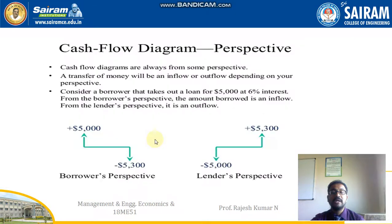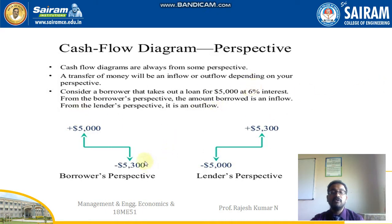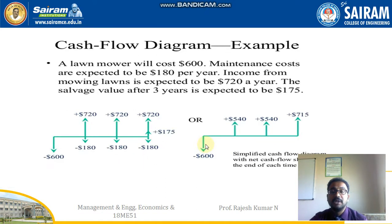Initial investments are shown at time 0. Cash flow diagrams are always from some person's perspective — a transfer of money will be an inflow or outflow depending on your perspective. Consider a borrower that takes out a loan of 5000 dollars at 6% interest. From the borrower's perspective, the amount borrowed is an inflow; from the lender's perspective it is an outflow for the same money. The cash flow diagram is shown here for both the borrower's perspective and the lender's perspective.